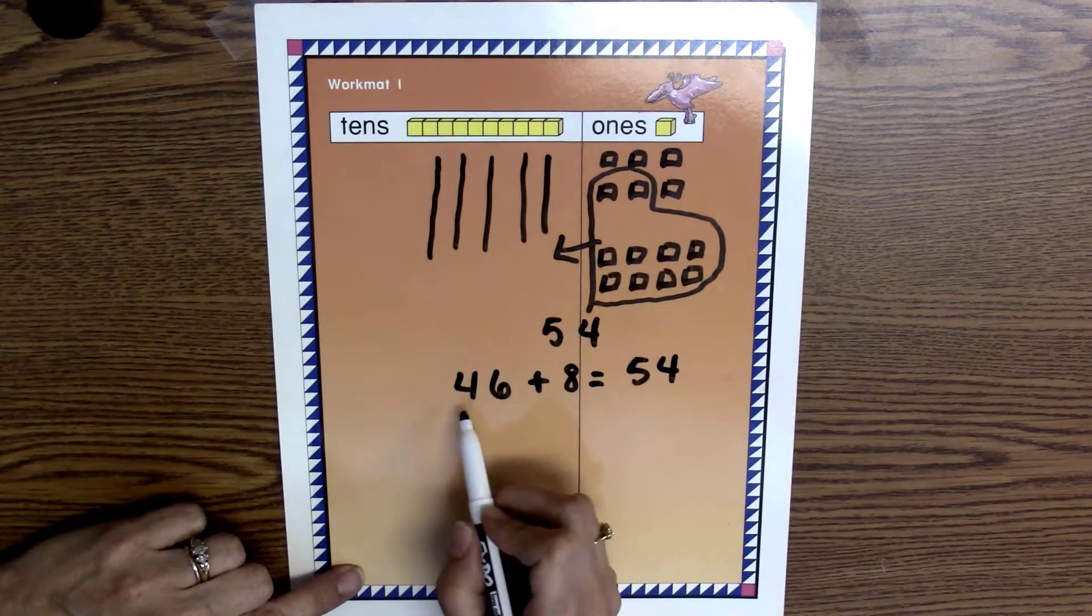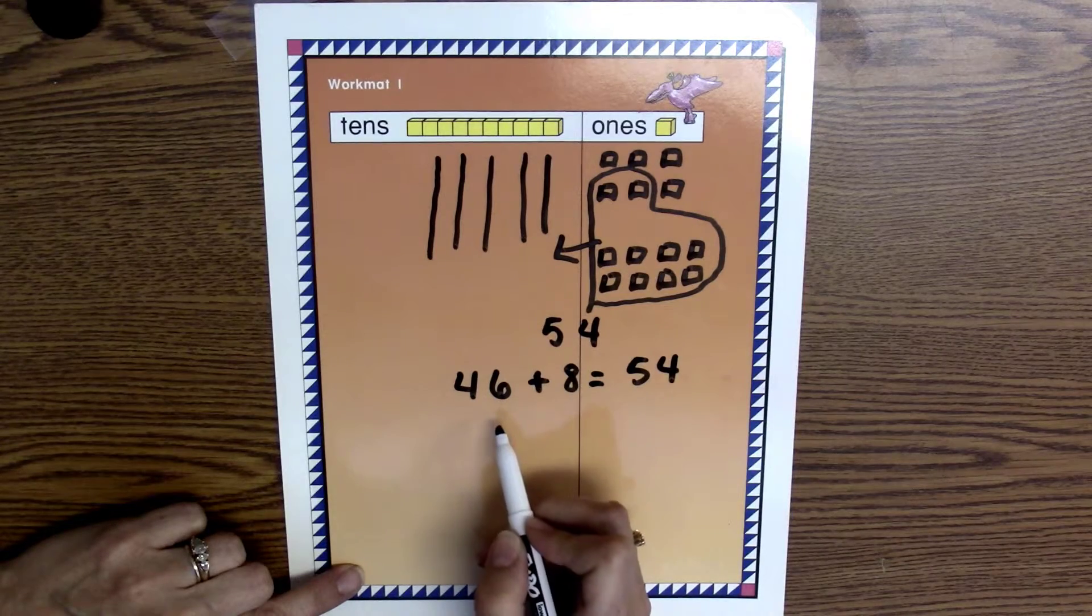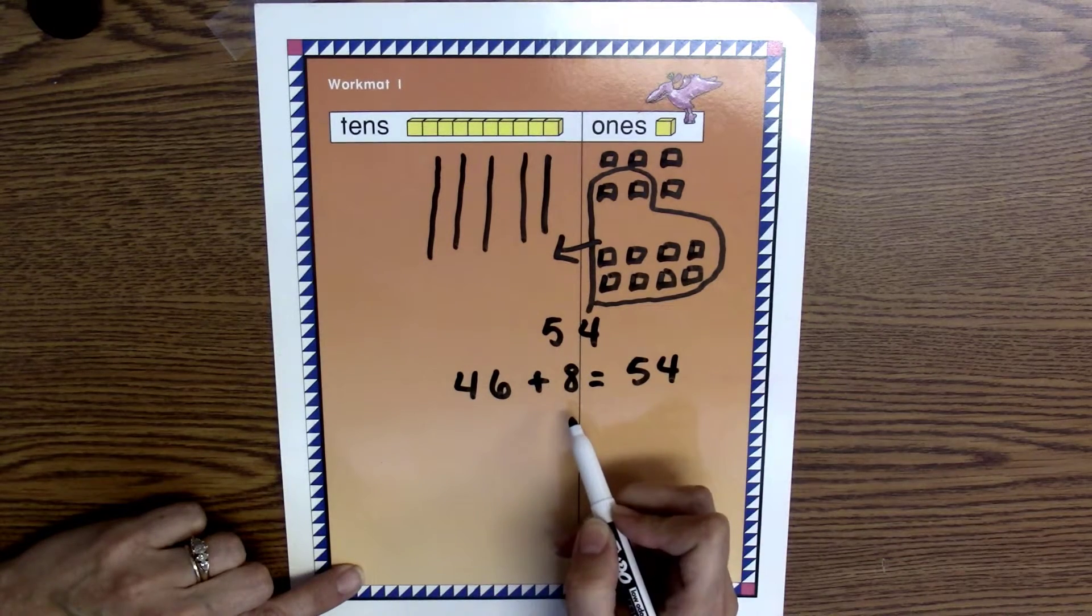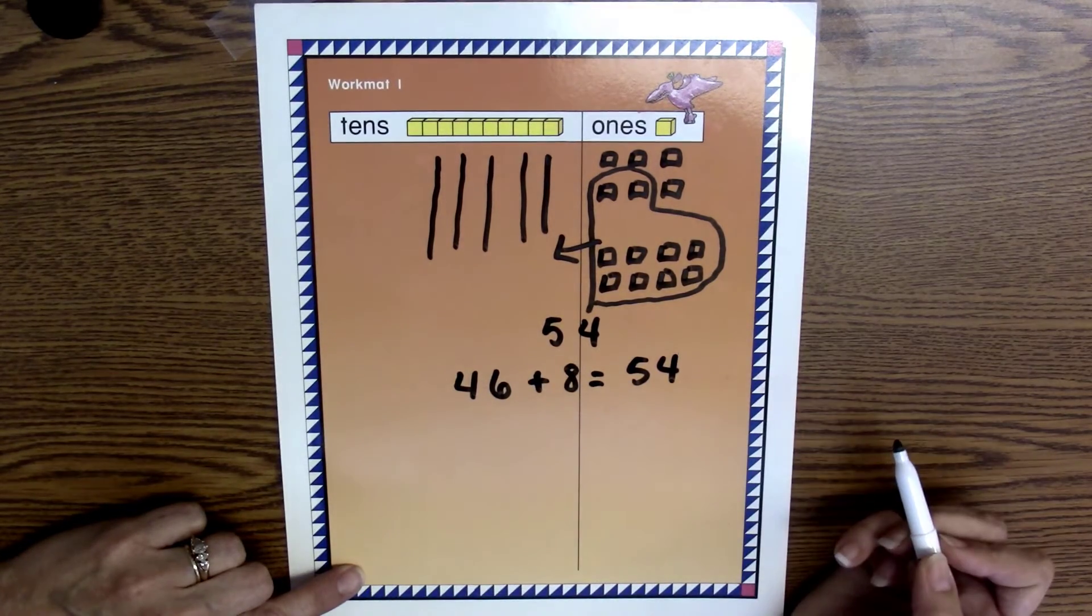If I look at the problem, Amanda started with 46 pennies, and she was given 8 more, which equals 54 pennies in all.